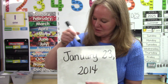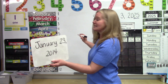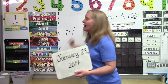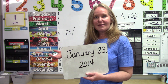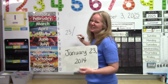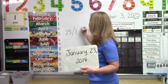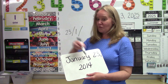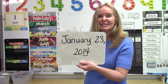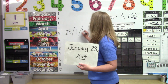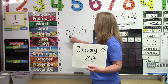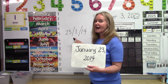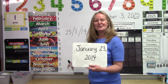We're going to start with the day first, so it is the 23rd. The 23rd of which month? The first month — January. I gave you an easy one! And then what would our year be? 14 — we're going to use just the last two digits. So 23-1-14 is the 23rd day of January, 2014.